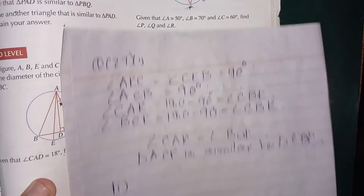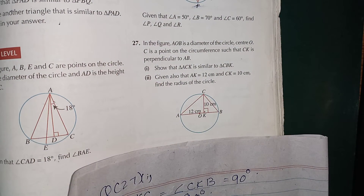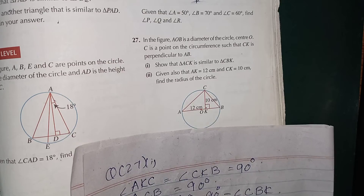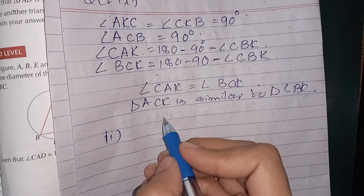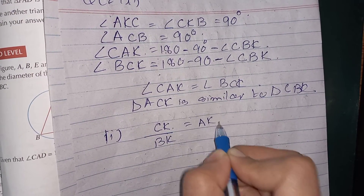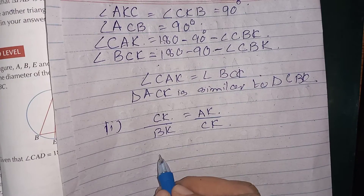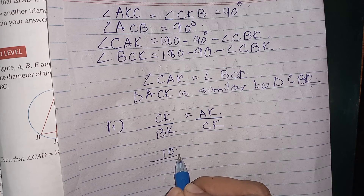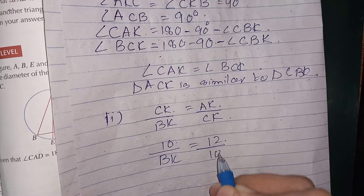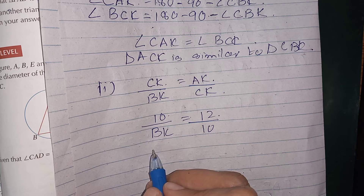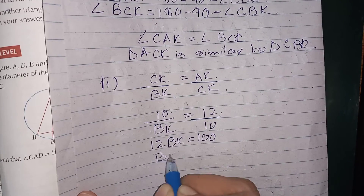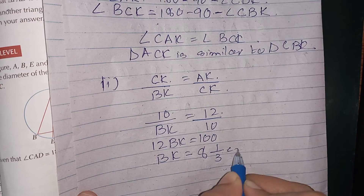For part 2, given also that AK equals 12 centimetres and CK equals 10 centimetres, find the radius of the circle. Since the two triangles are similar, we can write CK over BK equals AK over CK. Substituting: 10 over BK equals 12 over 10. So 12 times BK equals 100, giving BK equal to 8 and one-third centimetres.